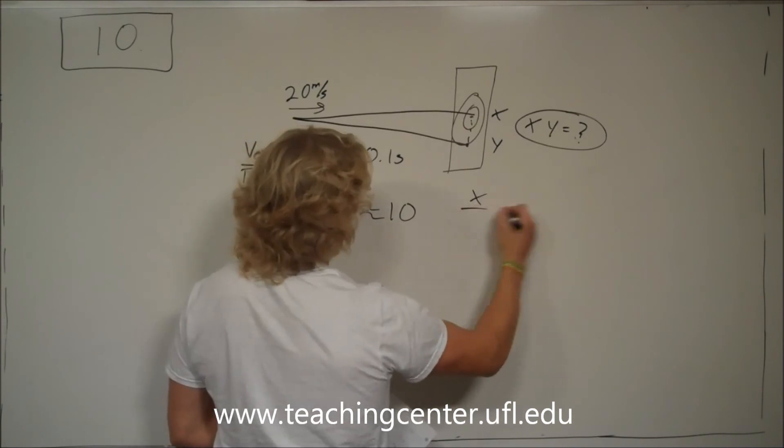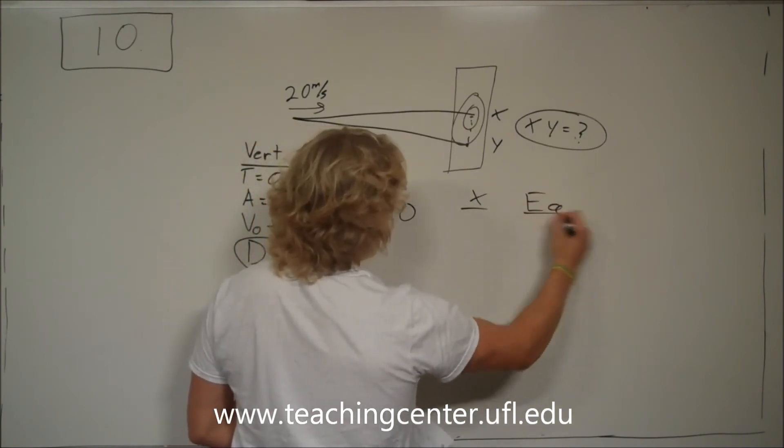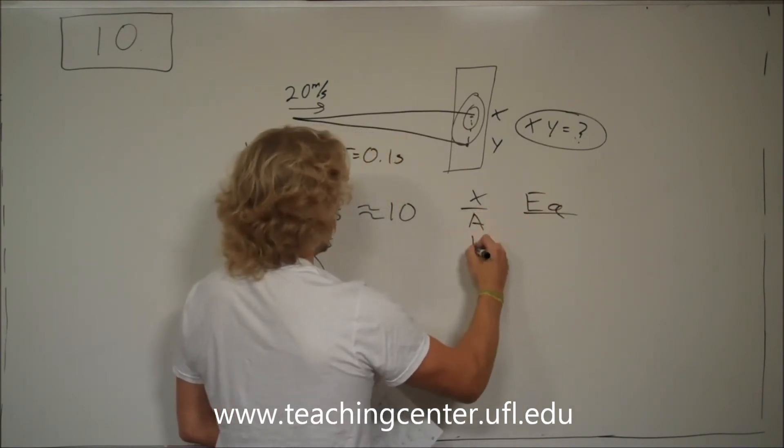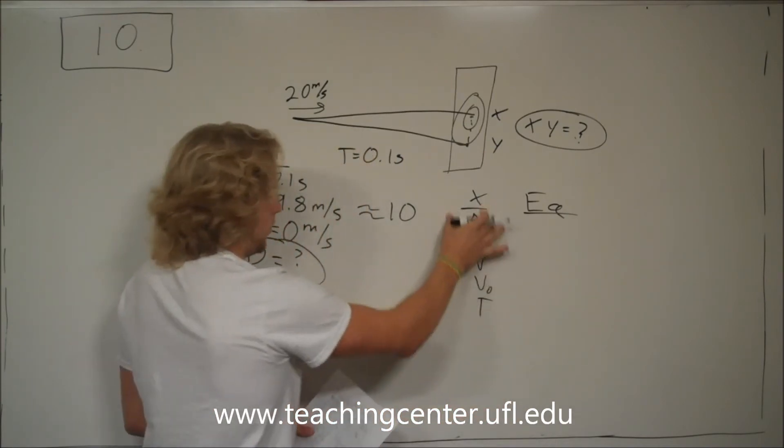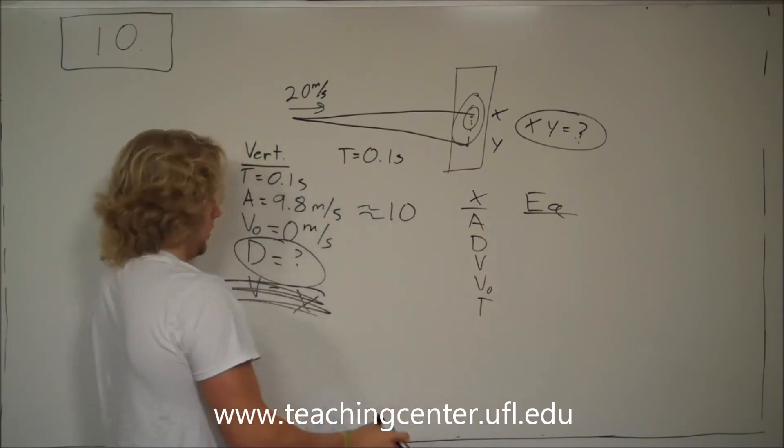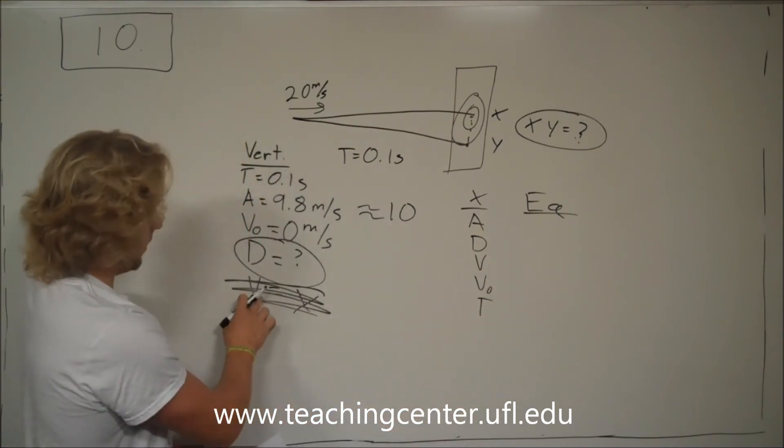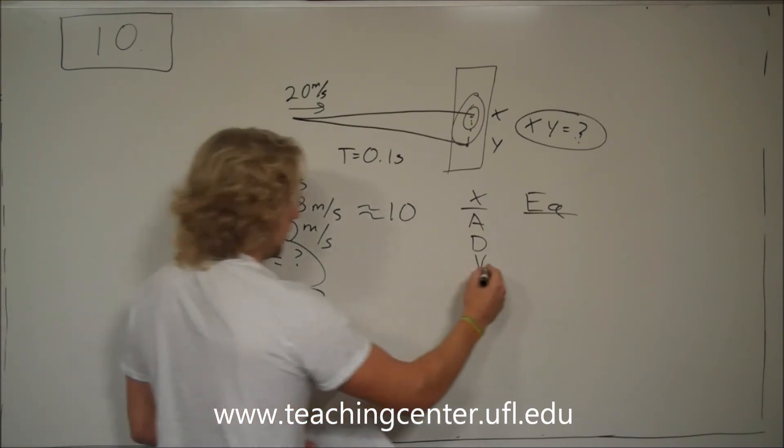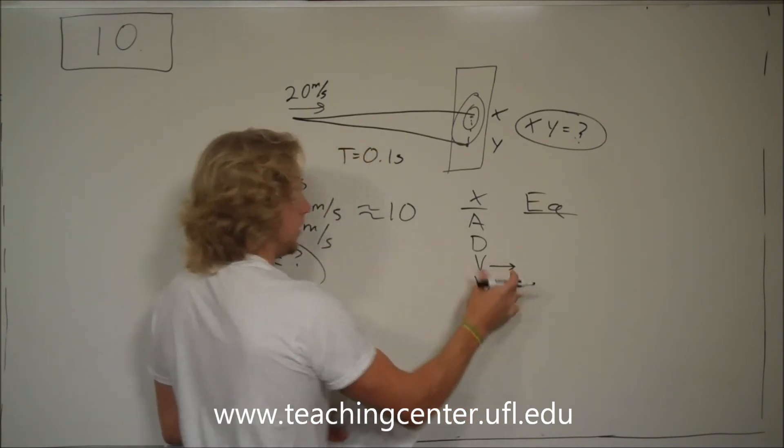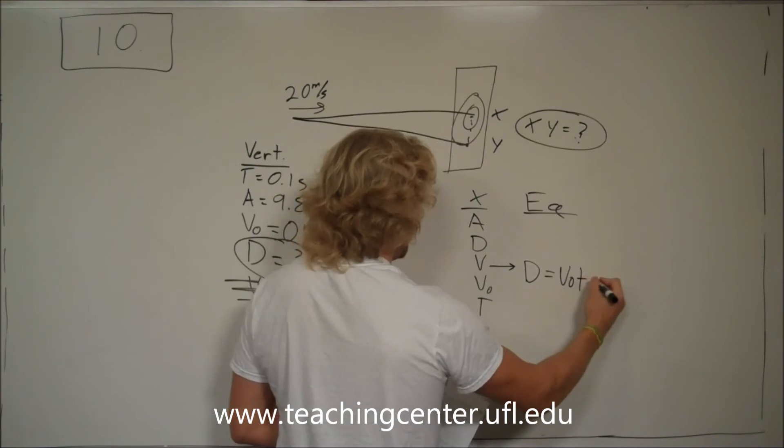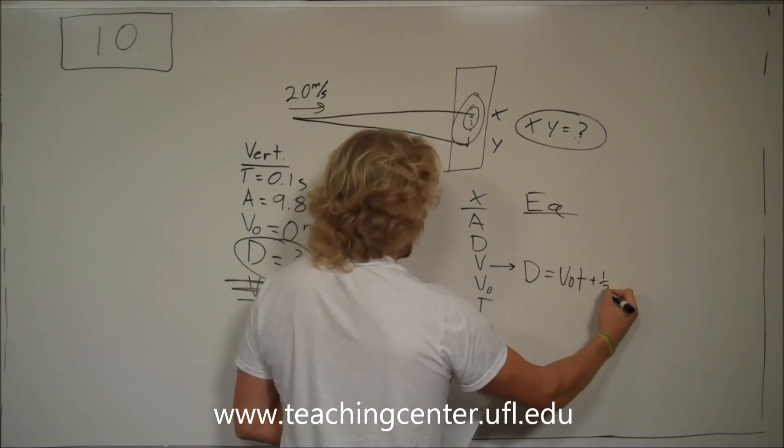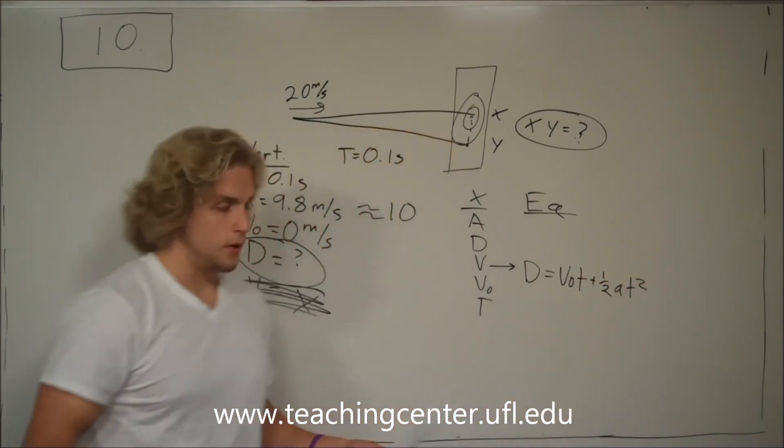where it goes x, and then the equations given, where it goes a, d, v, v-naught, and t. What is not included in the equation, we look at the one that doesn't have v. The one that doesn't have the final velocity. And that is d is equal to v-naught t, plus one-half a t squared.